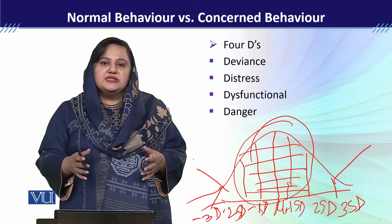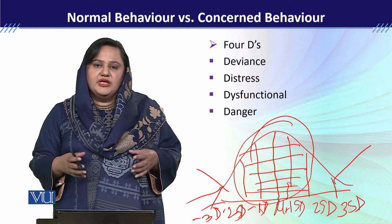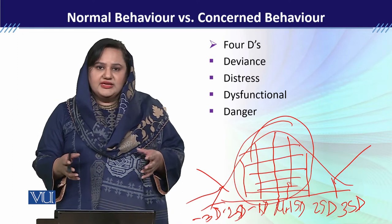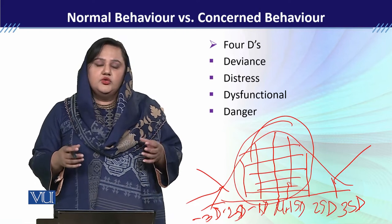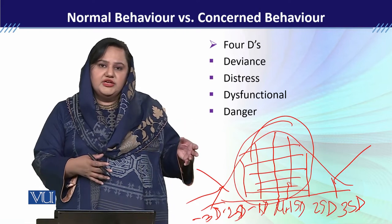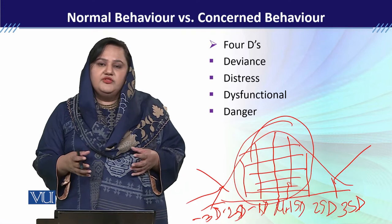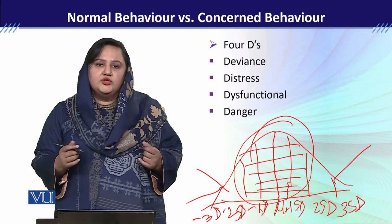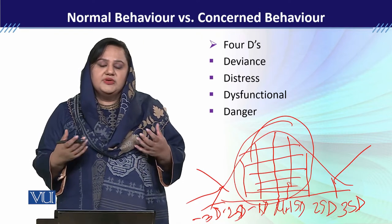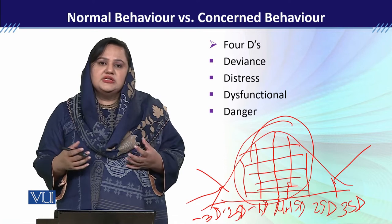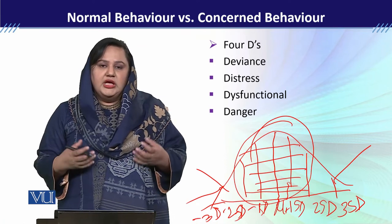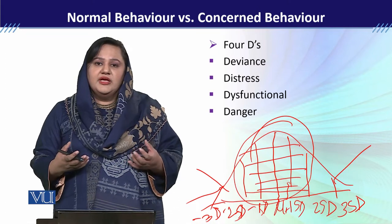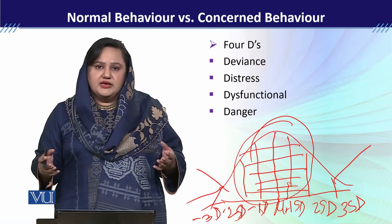لیکن جو لوگ two standard deviations سے باہر چلے جائیں، وہ ایسا behavior exhibit کر رہے ہیں جو mostly لوگ نہیں کرتے — یعنی وہ mean سے deviate ہو جاتے ہیں۔ مثال کے طور پر، عام طور پر لوگ اپنی personal hygiene کا خیال رکھتے ہیں۔ اگر ایک شخص اپنے بال نہیں دھو رہا، منہ نہیں دھو رہا، دانت brush نہیں کر رہا — تو یہ behavior normal سے deviate کر رہا ہے۔